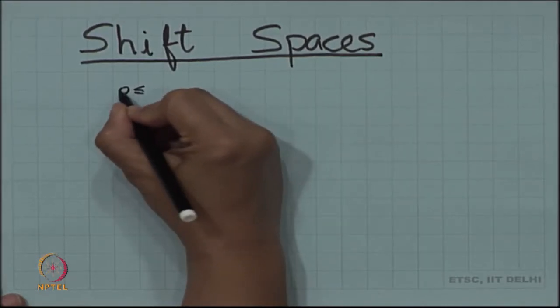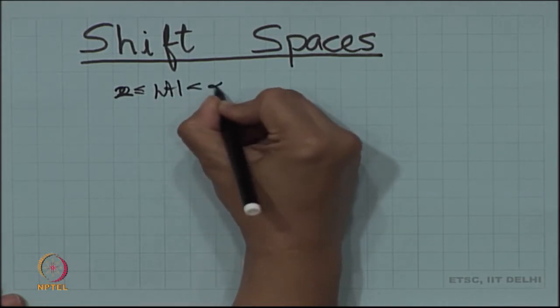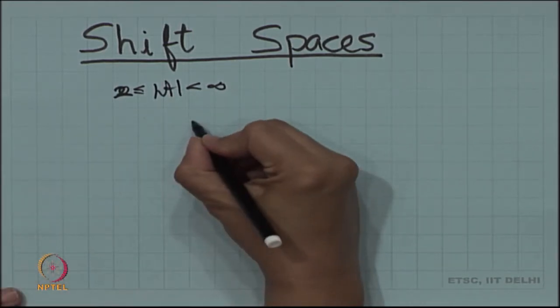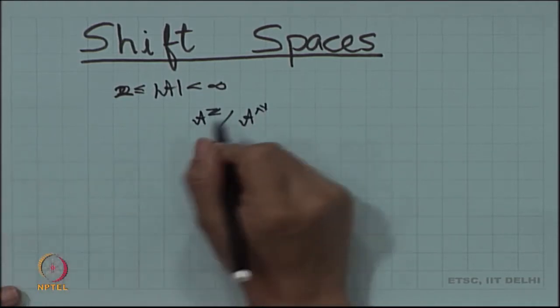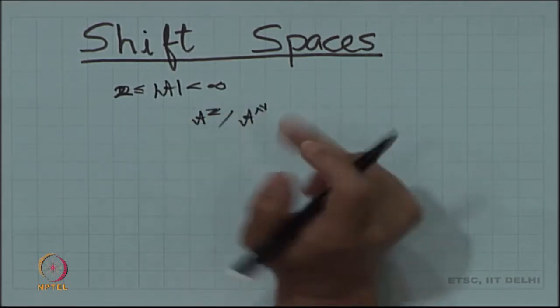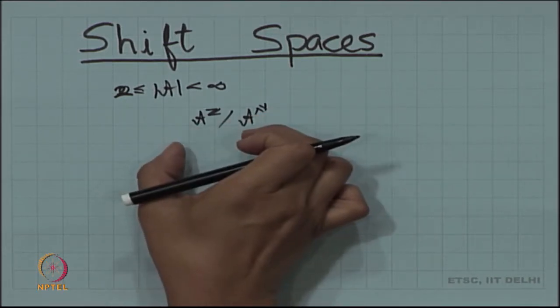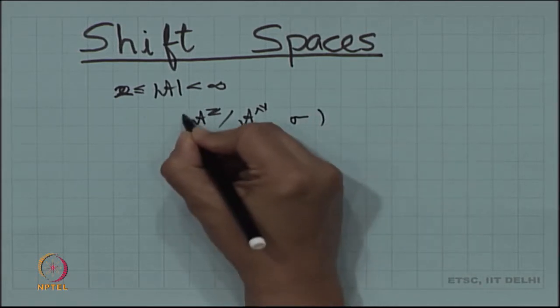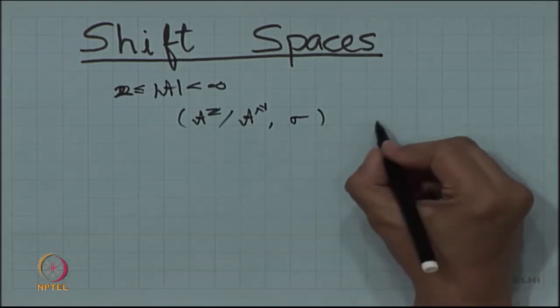What we had looked into was that if you start with a finite alphabet set A such that 2 ≤ |A| < ∞, so you look into a finite alphabet set A with at least 2 elements, then A^Z or A^N — the set of all bi-sequences or infinite sequences with letters from A — gives a compact metric space. On this compact metric space you can apply the shift map and study the dynamical system. This is a shift space, and it is called a full shift.